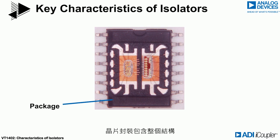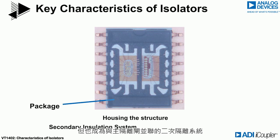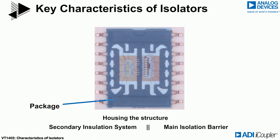The chip package houses the entire structure, but also becomes a secondary insulation system in parallel with the main isolation barrier. Its characteristics may limit the performance of the isolator in certain conditions.